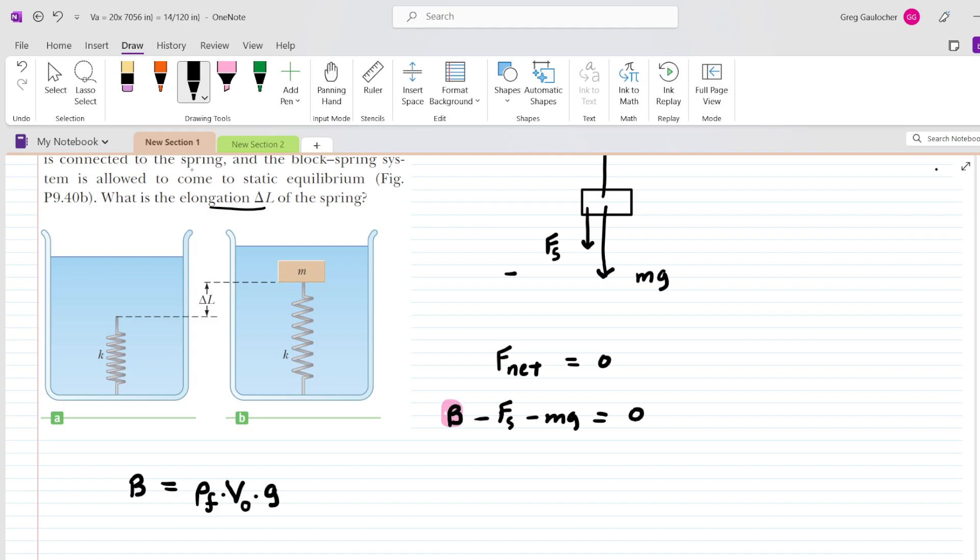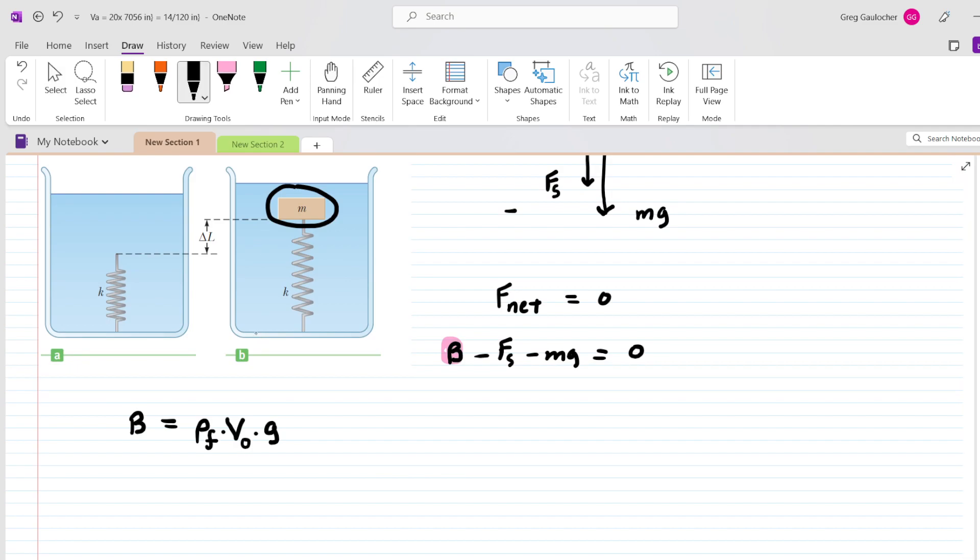Now, if we look at the picture, the block is completely submerged in the fluid. And so because the block is completely submerged in the fluid, we're going to be using the complete volume of that block. So we're just going to rewrite this formula slightly. We'll have the density of the fluid multiplied by the volume of the block and then multiplied by g. We're going to take this expression for the buoyant force and substitute it into our Newton's second law equation.